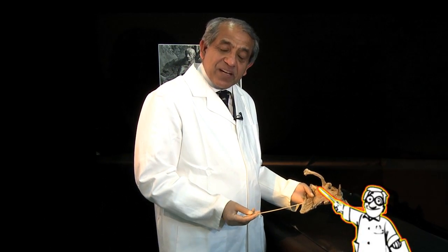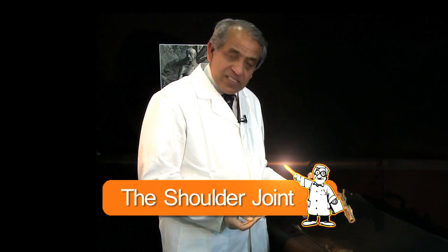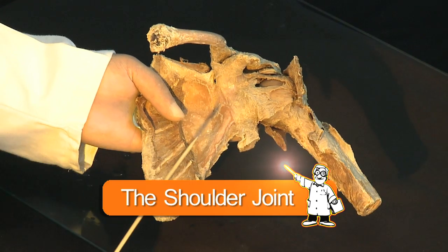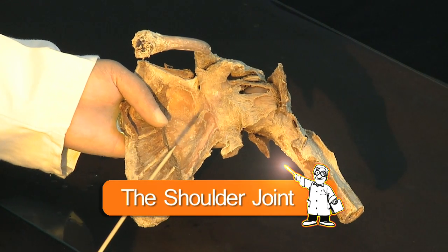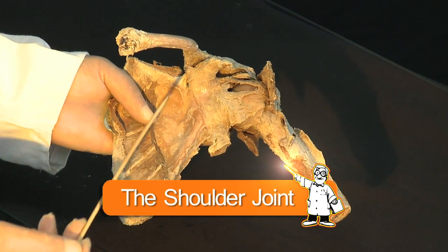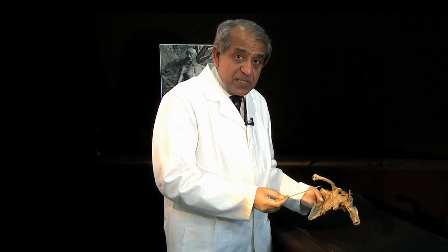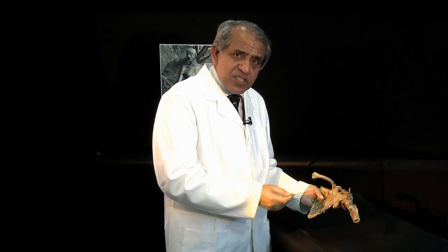We're now going to take a look at the anatomy of the shoulder joint using this specimen of a left shoulder. It's partially disarticulated. We're going to get into the shoulder joint in a moment, but let's first have a look at its relationships from the front.